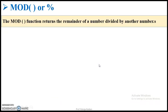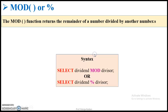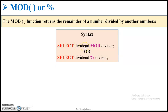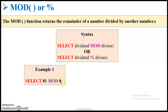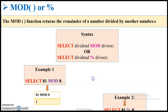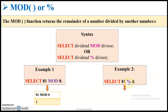Then comes the mod function. This mod function returns the modulus value — that is, the remainder of the division performed. The syntax is: SELECT dividend MOD divisor, or SELECT dividend % divisor. Both work the same way. For SELECT 81 MOD 8: 8 tens are 80, so the quotient is 10 and the remainder is 1. The answer is 1. Similarly, 81 % 8 also returns 1.